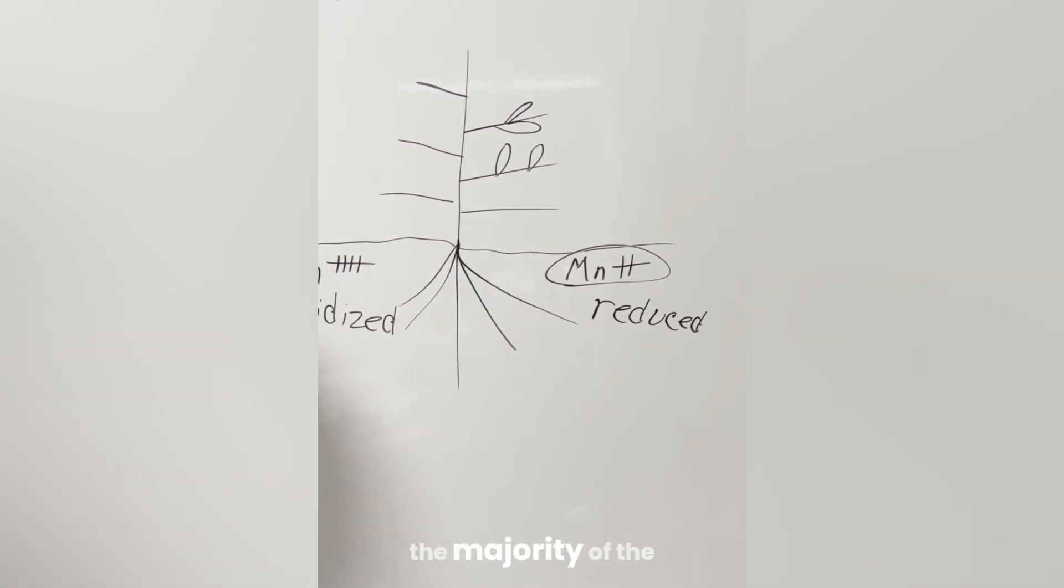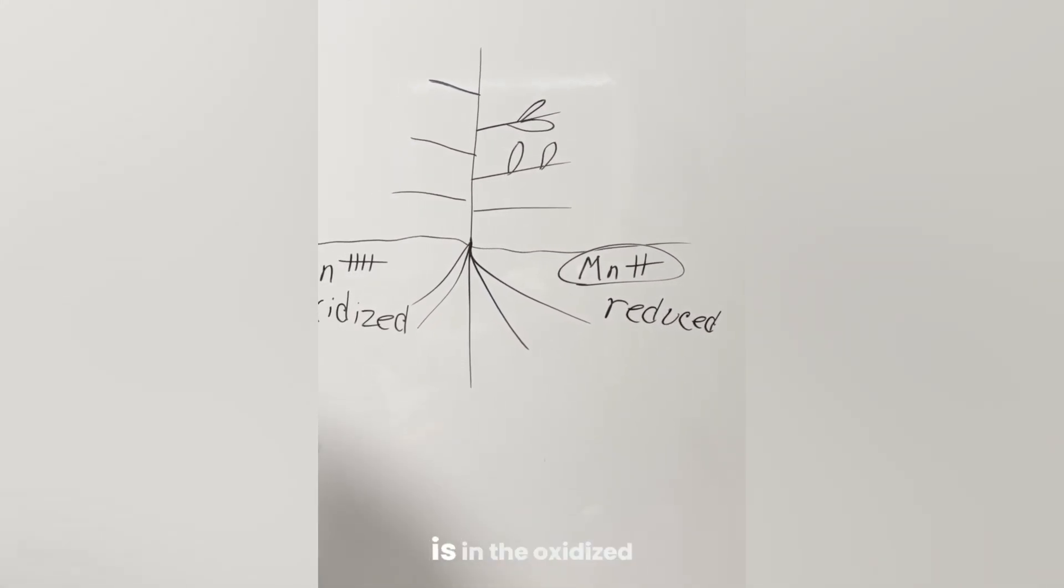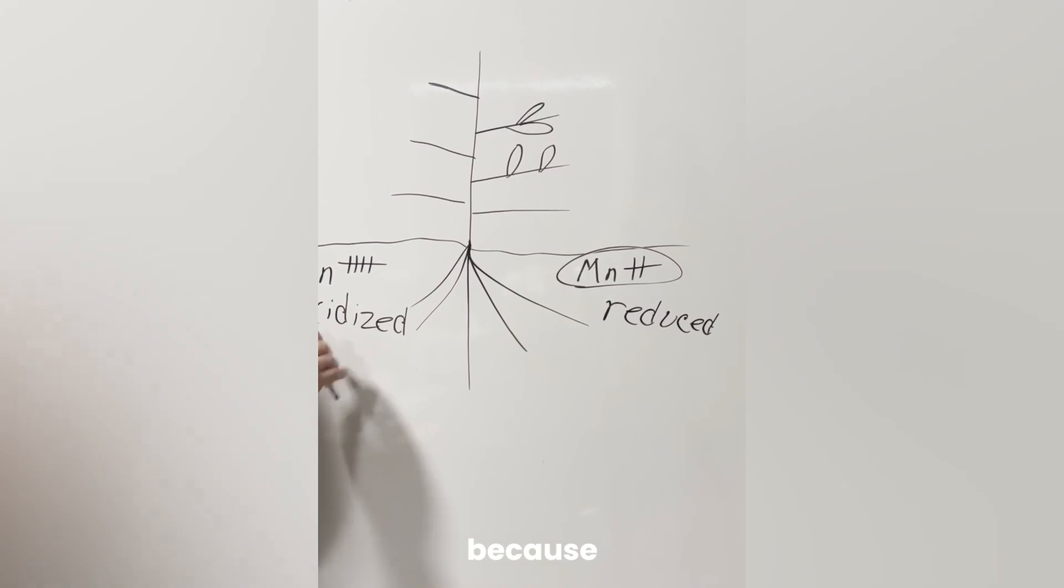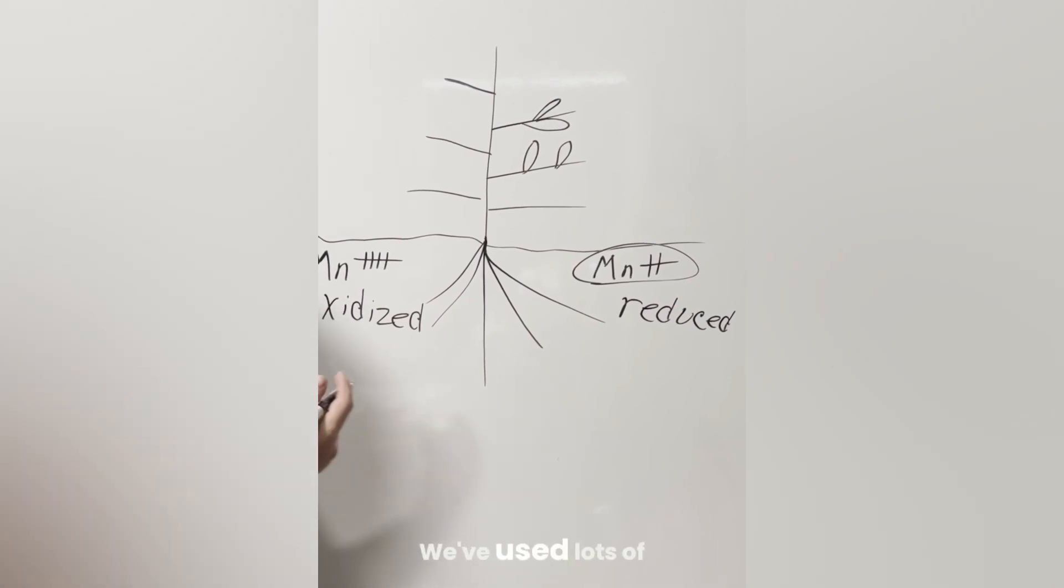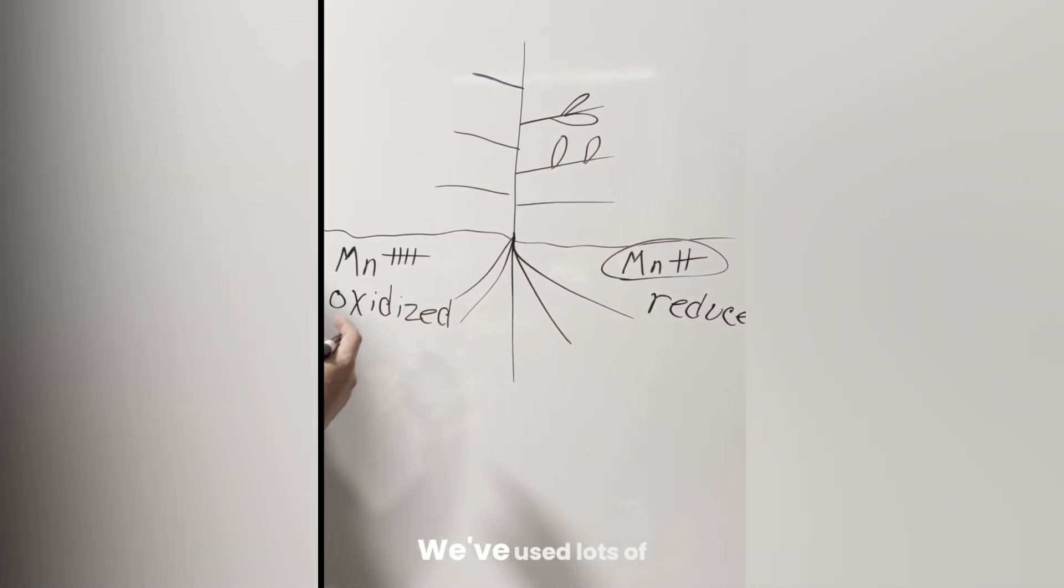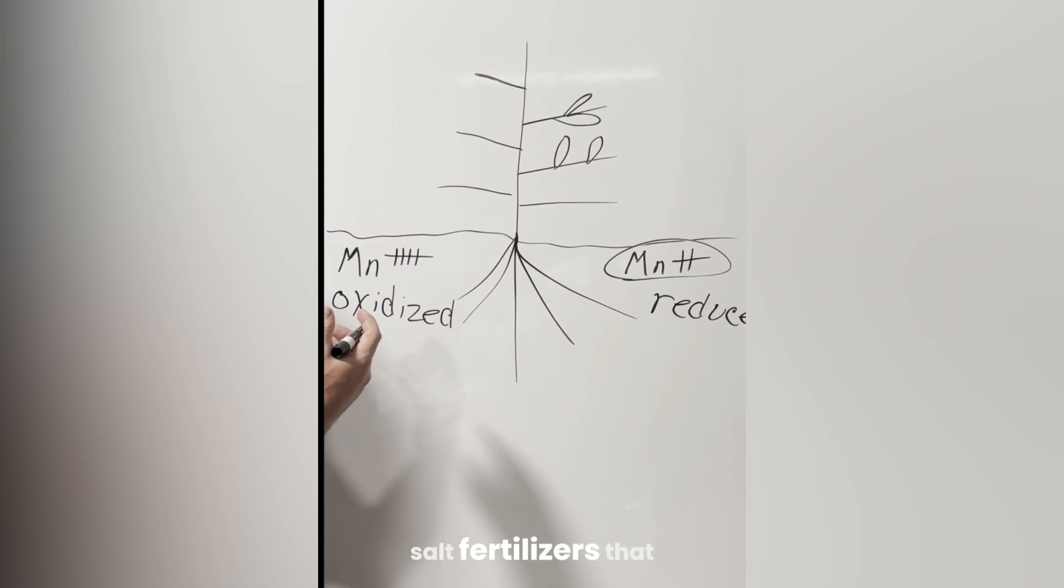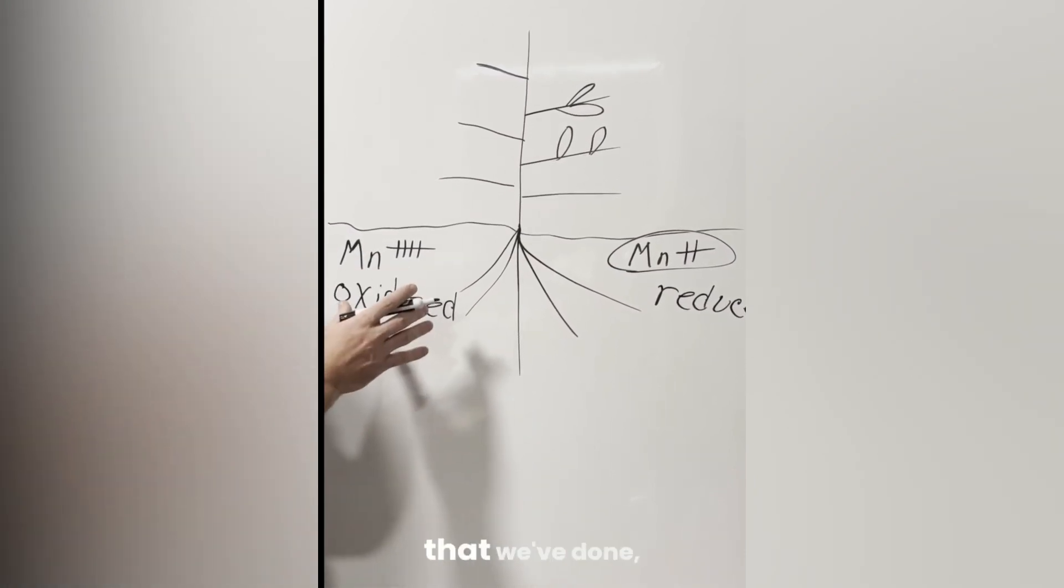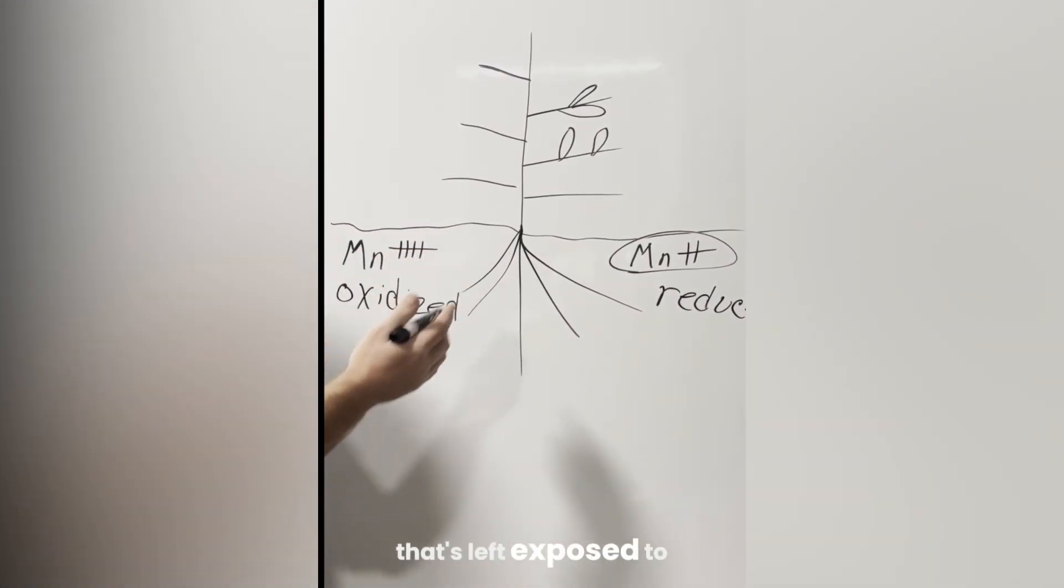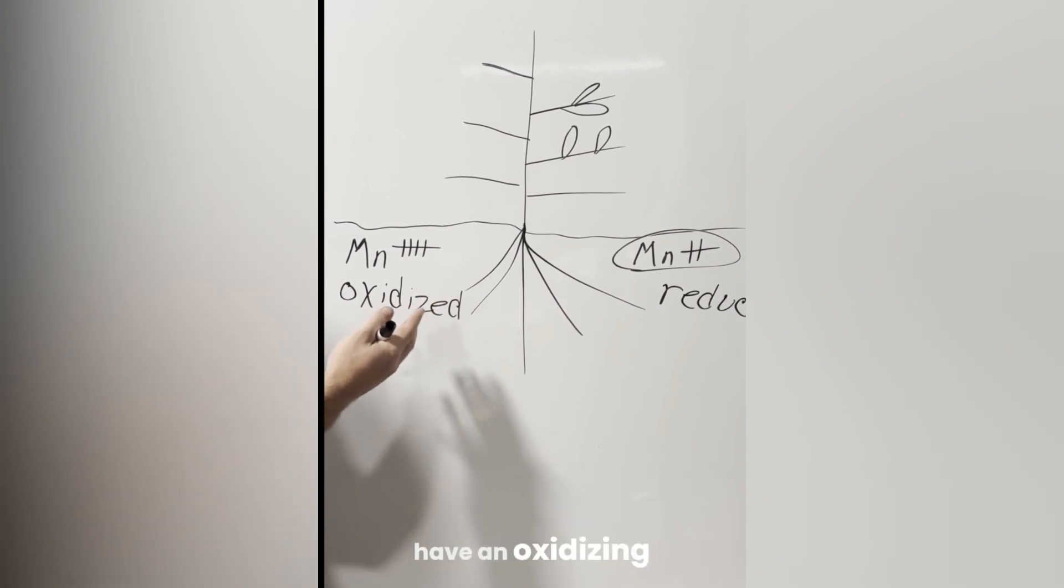And the majority of the manganese in our soils is in the oxidized form of manganese because of a lot of the historical cultural management practices that we've used. We've used lots of tillage, lots of salt fertilizers that have high electrical conductivity. We've made a lot of limestone applications. Many of the things that we've done, we have bare soil that's left exposed to the sunlight. All of those things have an oxidizing effect.